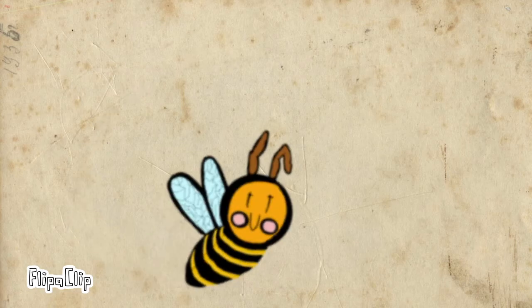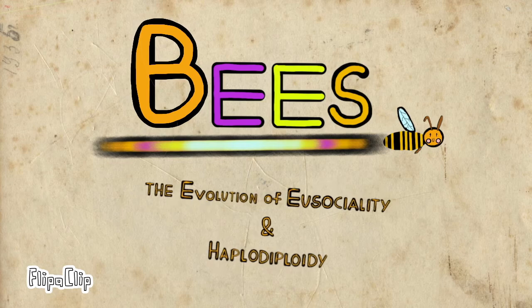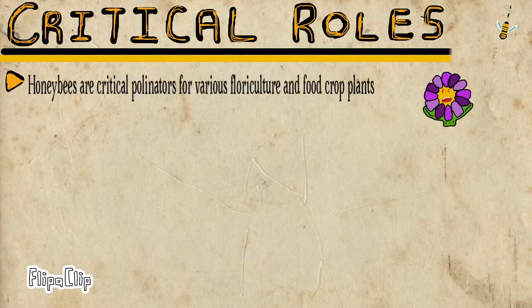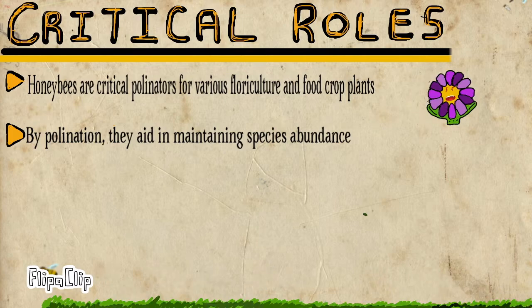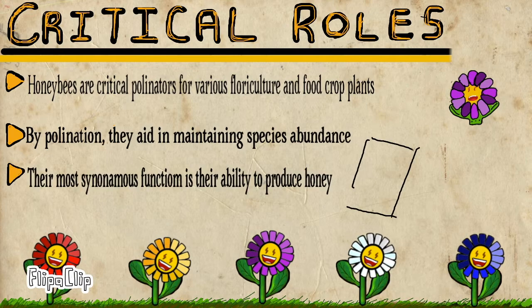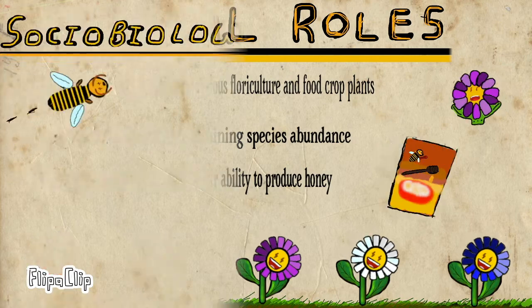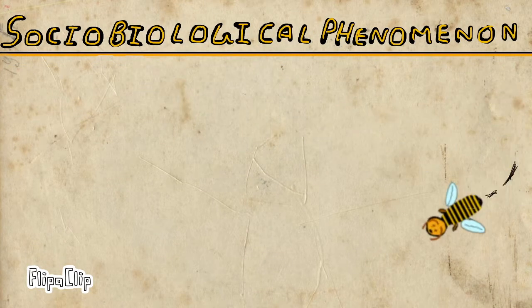The story of the evolution of haplodiploidy and eusociality. Honeybees play a critical ecological role within society — honeybees pollinate various flowering plants and food crops. By pollination they also help maintain ecological habitats by maintaining species abundance, but perhaps most synonymous with bees is their ability to produce honey.